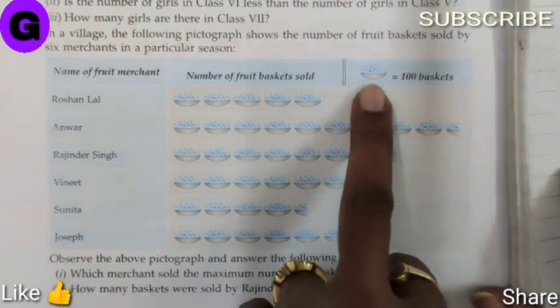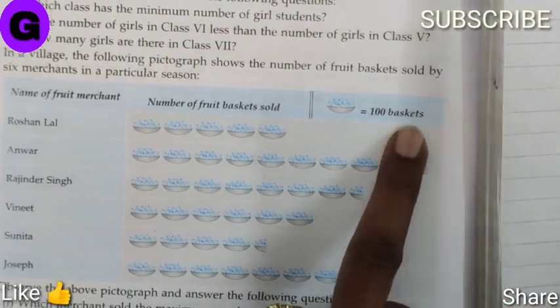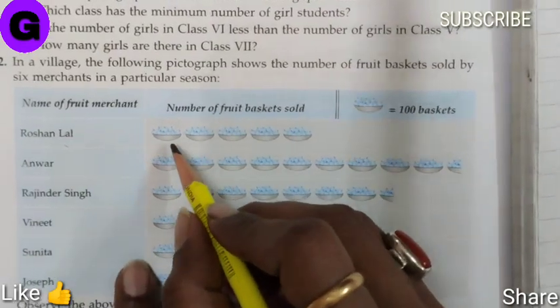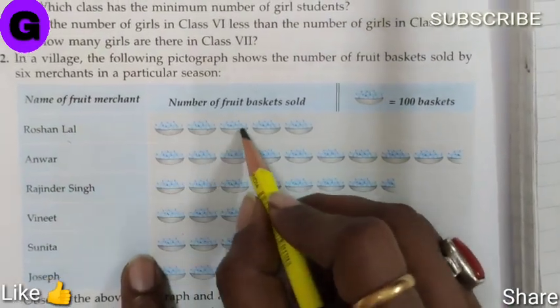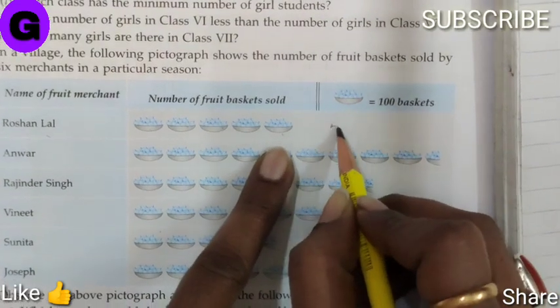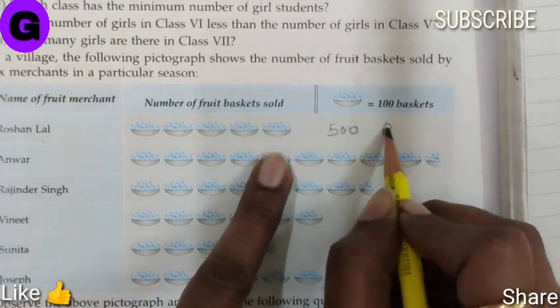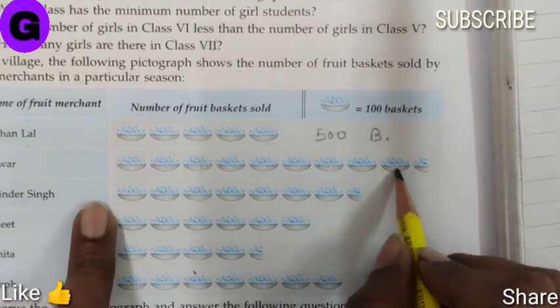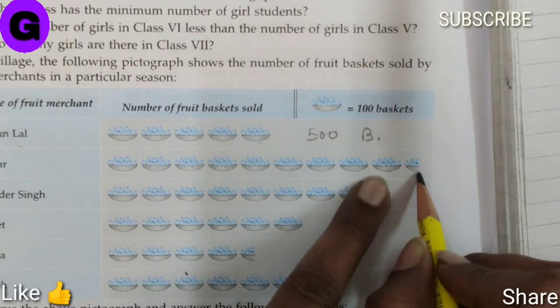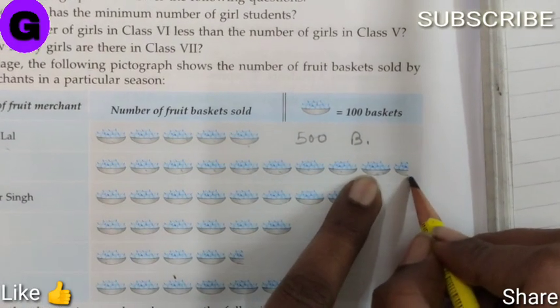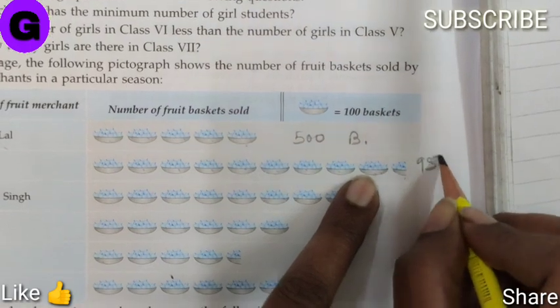Roshan Lal has 5 baskets, so 5 times 100 equals 500 baskets. Anwar has 9 and a half baskets. 9 means 900 and half means 50, so 950 total.